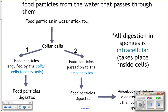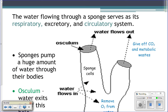So they are perpetually pumping and filtering to get their food. That flow of water through their body also acts as their respiratory system, excretory system, and circulatory system. As water comes in, it brings oxygen to the cells of the sponge. As it moves through, it picks up carbon dioxide and metabolic waste, and as it exits out the osculum, it takes those away.